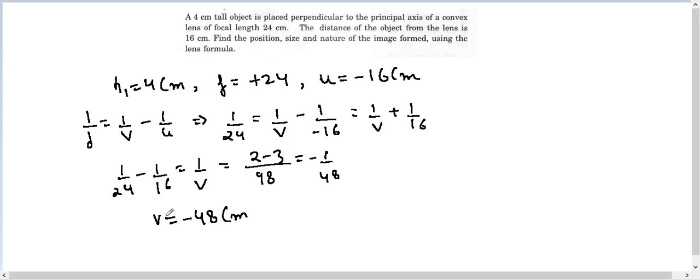Now let's talk about magnification, which is equal to v/u. So v comes out to be minus 48 and u is given to us is minus 16, so it is 3. That means the image is 3 times the size of the object, therefore we can see that it is magnified.